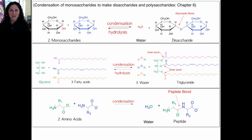You can specify how many amino acids are in the peptide with a prefix like di, tri, or tetra. The peptide shown here is actually a di-peptide. The opposite reaction, using water to cut the peptide bond, is hydrolysis.